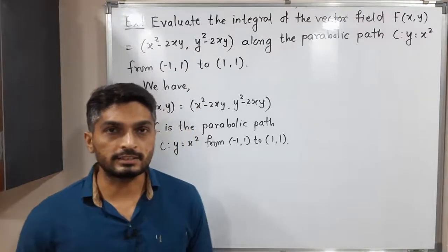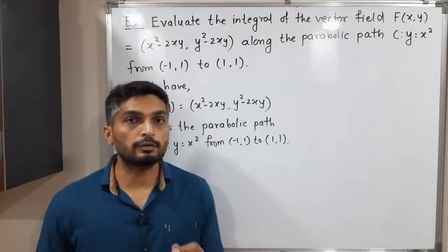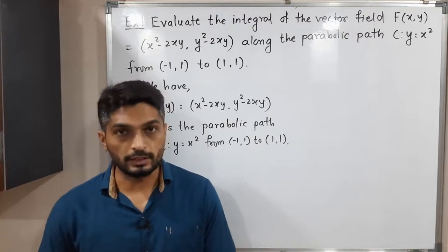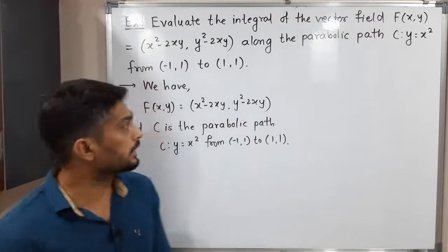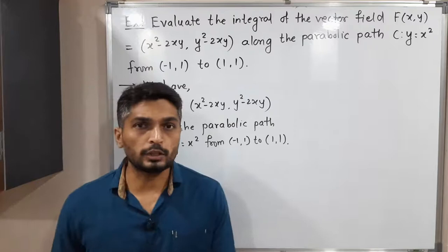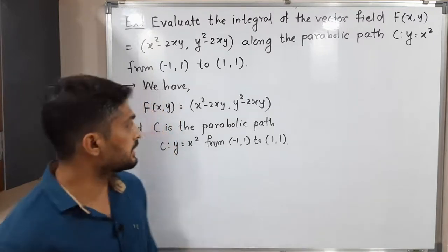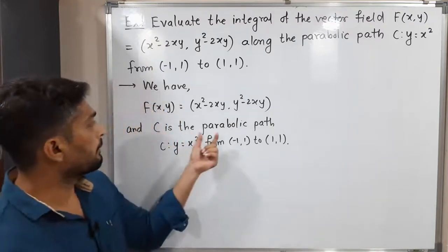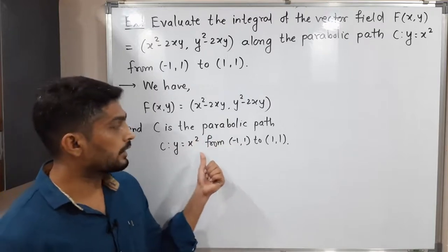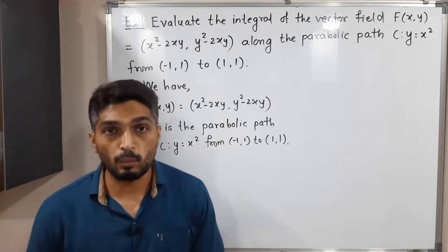Hi everyone, let us discuss this example. We have to find the value of the line integral of a vector field. The given vector field I have already written here. The next important thing is curve C. C is a parabolic path y = x² from (-1, 1) to (1, 1).